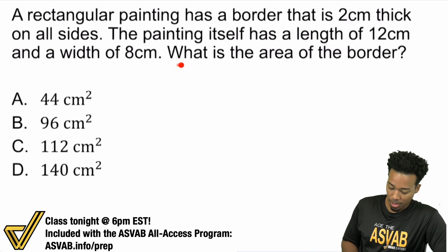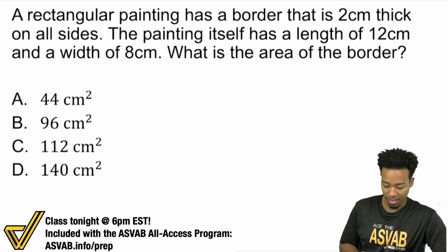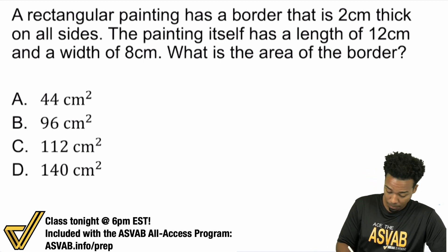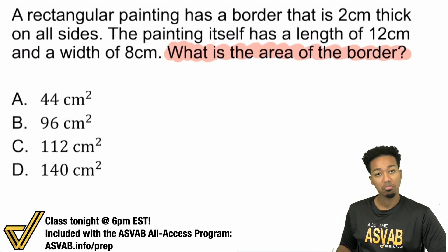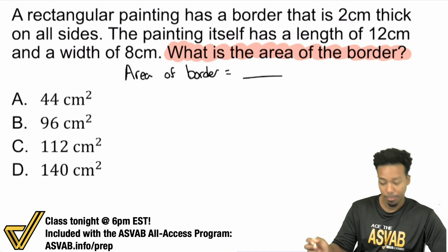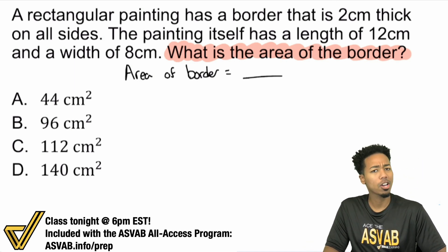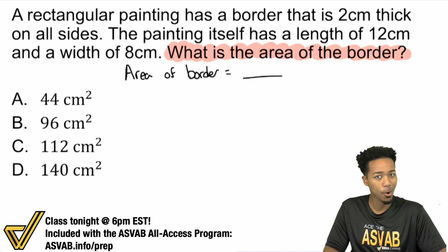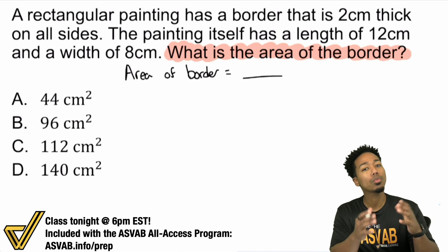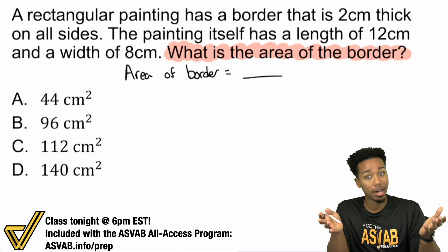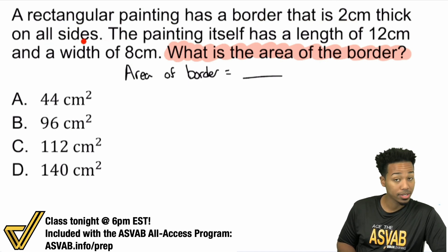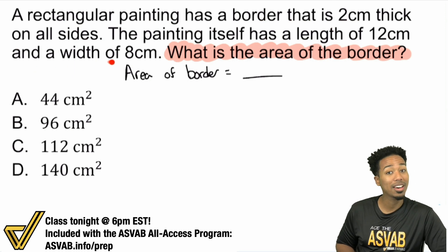So let's get started. The question asks: what is the area of the border? Notice how I started with the question itself and not the entire story — word problems will generally tell you exactly what you're looking for. So we're looking for area of border equals blank. A rectangular painting has a border that is two centimeters thick on all sides. The painting itself has a length of 12 centimeters and a width of 8 centimeters.